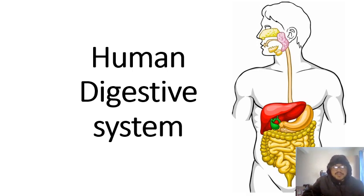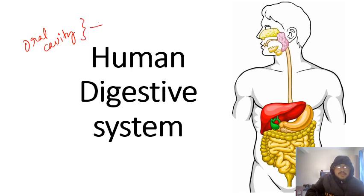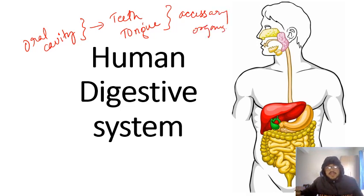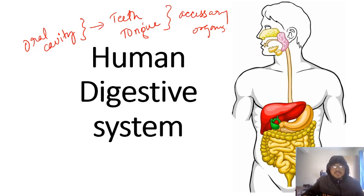Hello, so now we are going to discuss another topic in the human digestive system — the oral cavity. Today we will be discussing the teeth and the tongue. These are generally counted under the accessory organs, meaning they don't take part in the digestion process directly but they will help in the digestion process.